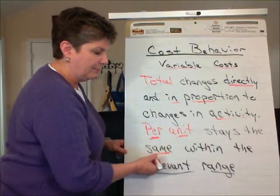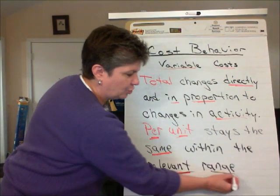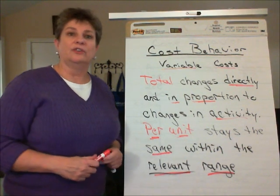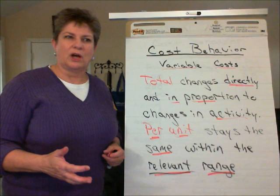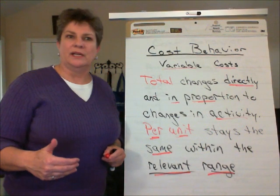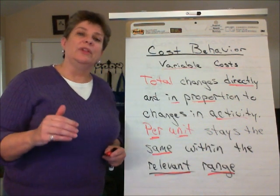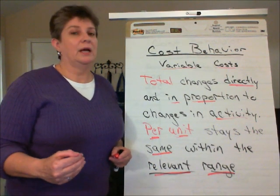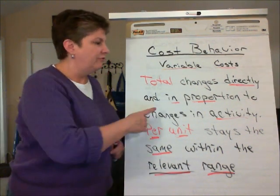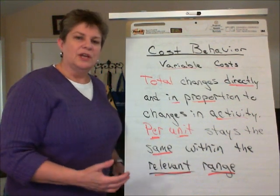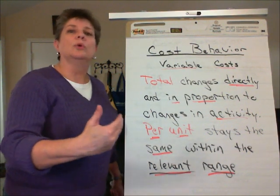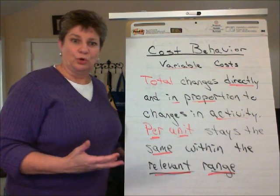will stay the same within what we call the relevant range of activity. That relevant range may be, say, from zero to 100,000 units — we are under contract for our direct materials to cost a dollar per unit. Or it may be a time period. For example, a copier lease — we may have a lease on a copier for a year, and within that year every copy we make will cost us five cents a copy. After that year is up, the variable cost per unit will change. So we need to know what the per unit cost is in order to predict what the total cost will be as the activity measure changes.